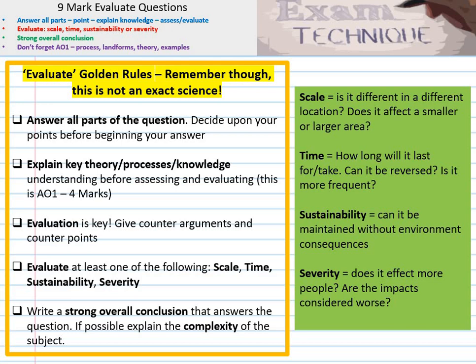I've created a few golden rules to help you evaluate in these 9-mark questions. First, make sure you answer all parts of the question — look carefully at the wording. Second, make sure you include AO1: key theory, processes, and knowledge — something you'll need to actively work into your essays. Third, evaluate: make sure you have counter-arguments or counter-points, either in your conclusion or within your essay, on at least one of the following — scale (local, regional, national), future change, or levels of severity — something that shows you're going beyond the obvious answer. And really importantly, make sure you have a strong overall conclusion.